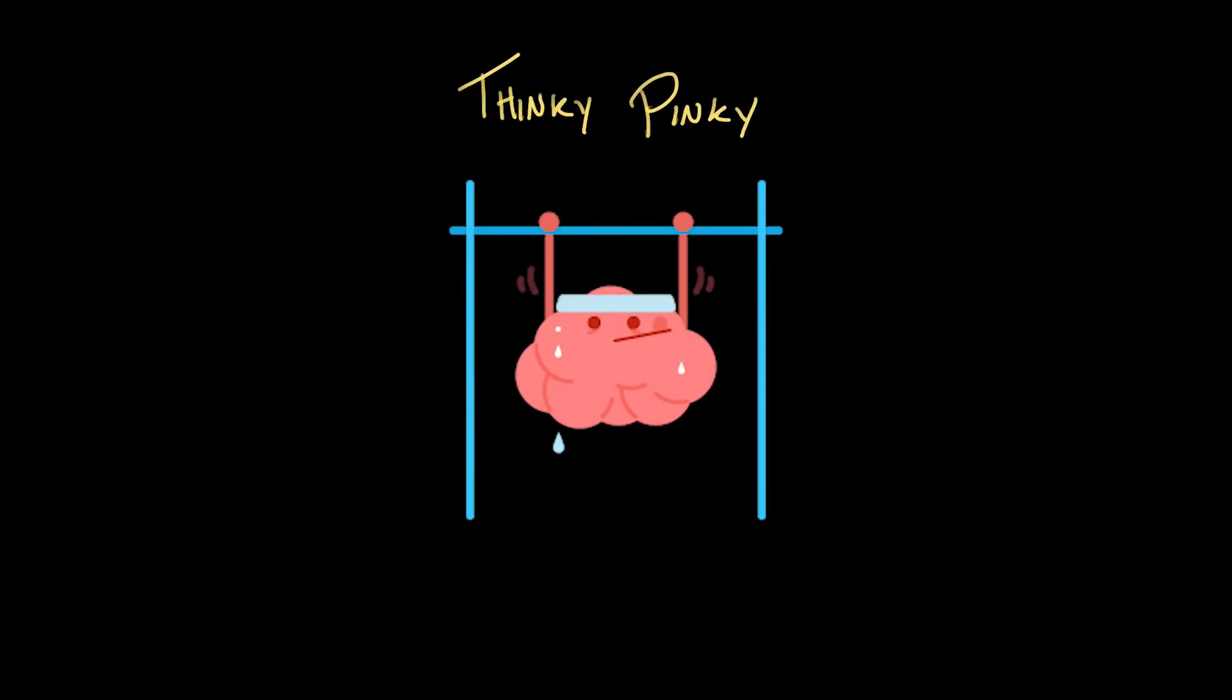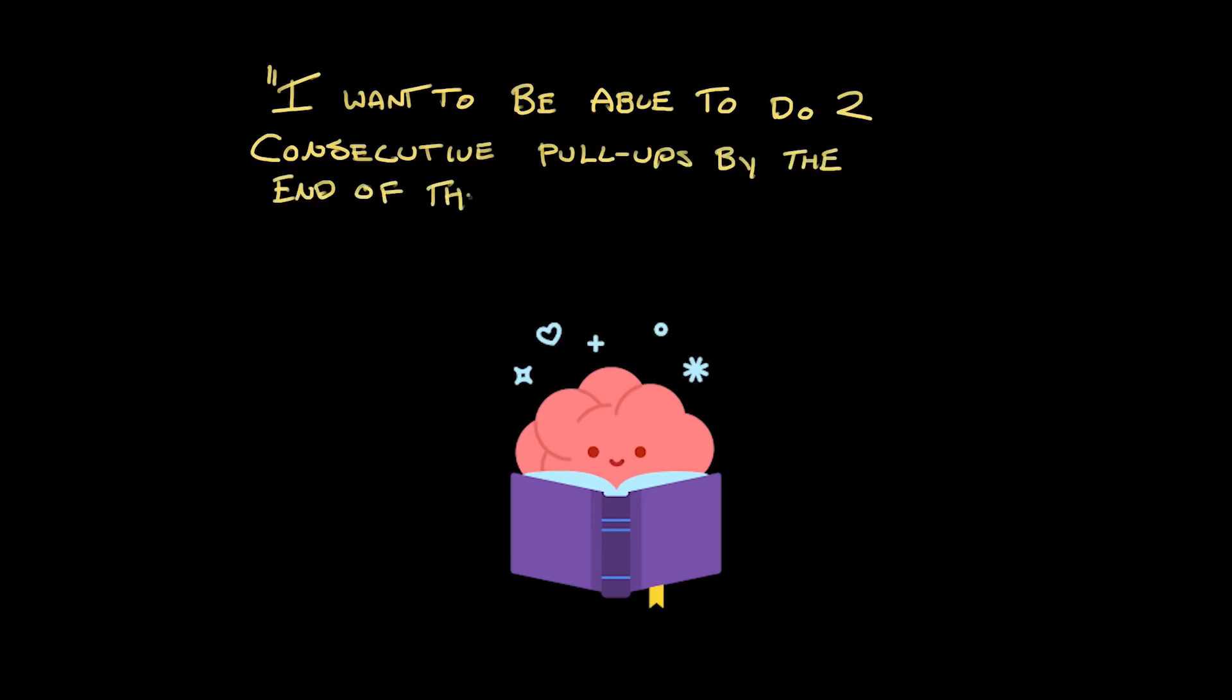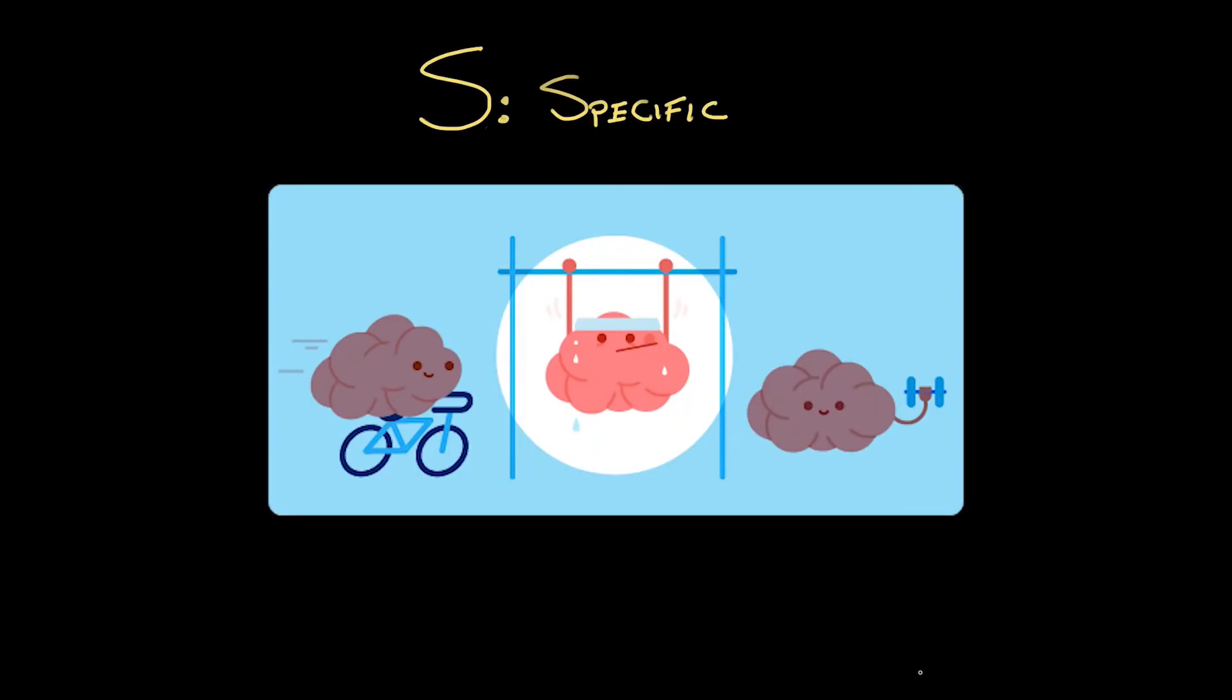So let's take a look at Thinky Pinky's reflection journal. Quote, I want to be able to do two consecutive pull-ups by the end of the year by practicing pull-ups at the gym three times per week. Why is this a smart goal? S is for specific. TP wants to work on pull-ups, and they're not interested in biking or weight training. There's one skill that Thinky Pinky wants to work on, and that's pull-ups.